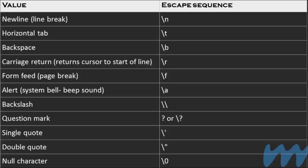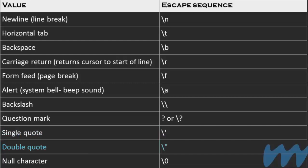Here's a list of escape sequences we are going to cover today: newline or line break (\n), tab (\t), backspace (\b), carriage return (\r) which returns the cursor to the start of the line, form feed (\f) which represents a page break but is now obsolete, system bell (\a) which gives a beep sound, backslash (\\), question mark (\?), single quote (\''), double quote (\"), and the null character (\0).